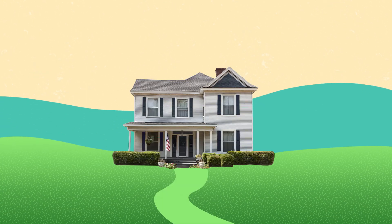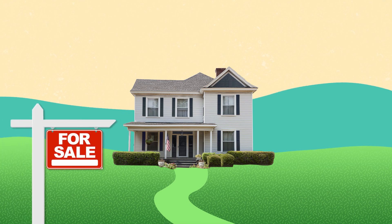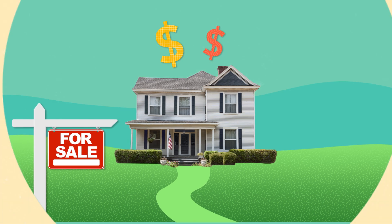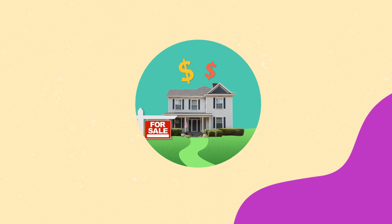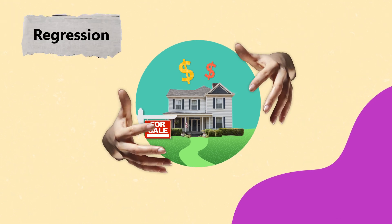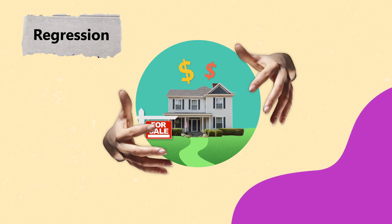Now, let's say you are house hunting. Ever wondered how property websites predict the price of a house? They use a type of algorithm called regression. It is like a fortune teller, predicting the future based on information like size, location, and other factors.